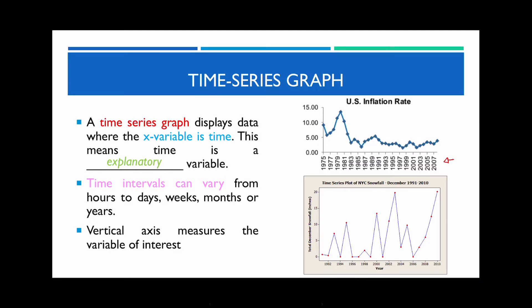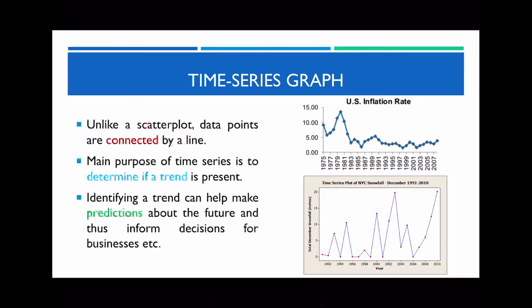Along the y-axis, you're always going to have the variable of interest, so that might be recording frequency or it might be showing you the percentage. One fundamental difference between a time series graph and a scatter plot is that in a time series graph, we always connect neighboring dots by a straight line, whereas in a scatter plot we often draw a line of best fit. In a time series graph, make sure you are joining each individual dot together by a straight linear line.